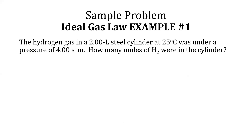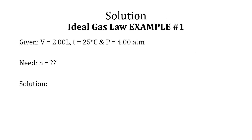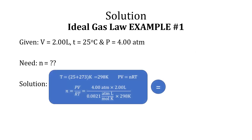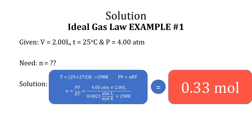Ideal gas law example one: hydrogen gas in a 2.00 L steel cylinder at 25 degrees Celsius is under a pressure of 4 atm. How many moles of H2 were in the cylinder? Given V equals 2 L, T equals 25 degrees Celsius, and P equals 4 atm, we solve for N. First, convert 25 degrees Celsius to Kelvin by adding 273 for a final temperature of 298 K. Using the ideal gas law, N equals PV over RT. Plugging in all values, including R equals 0.0821 L·atm/mol·K, N equals 0.33 moles.